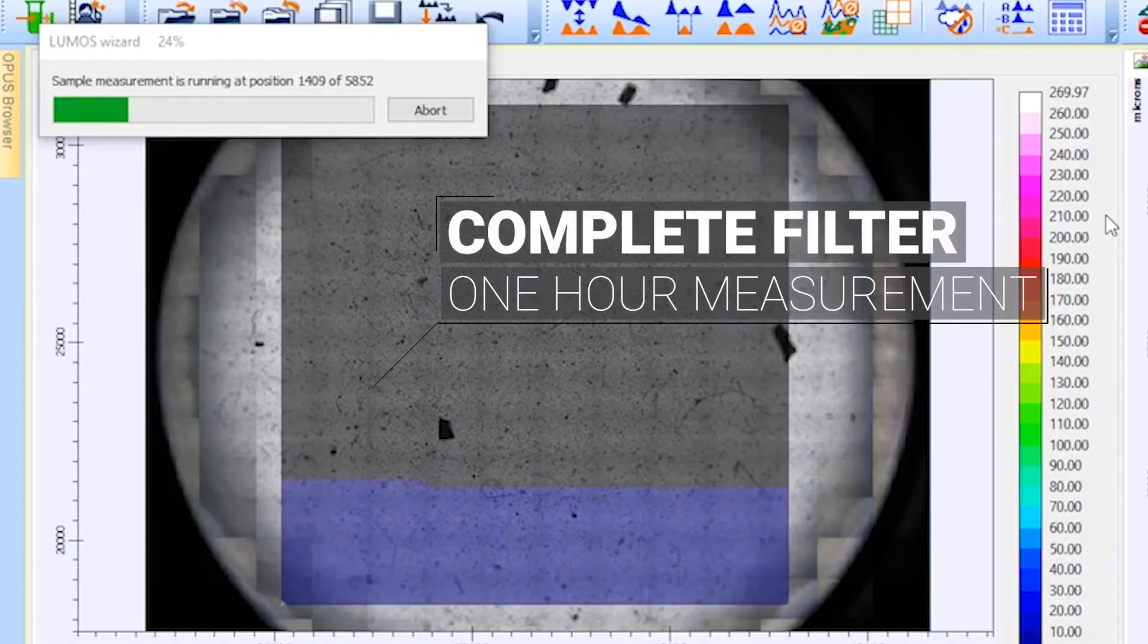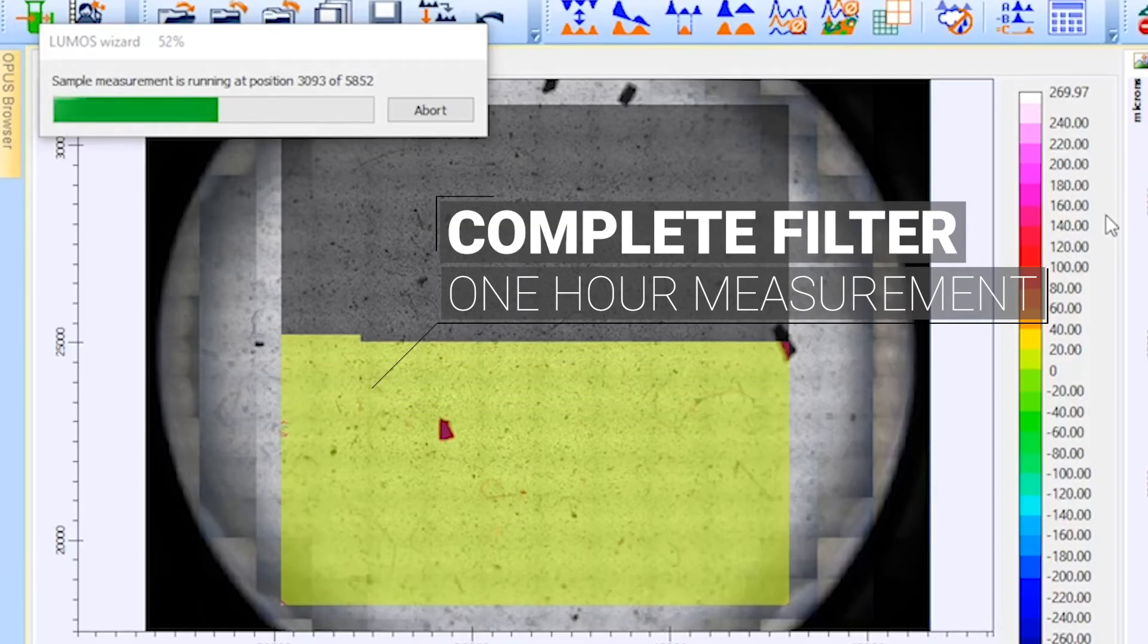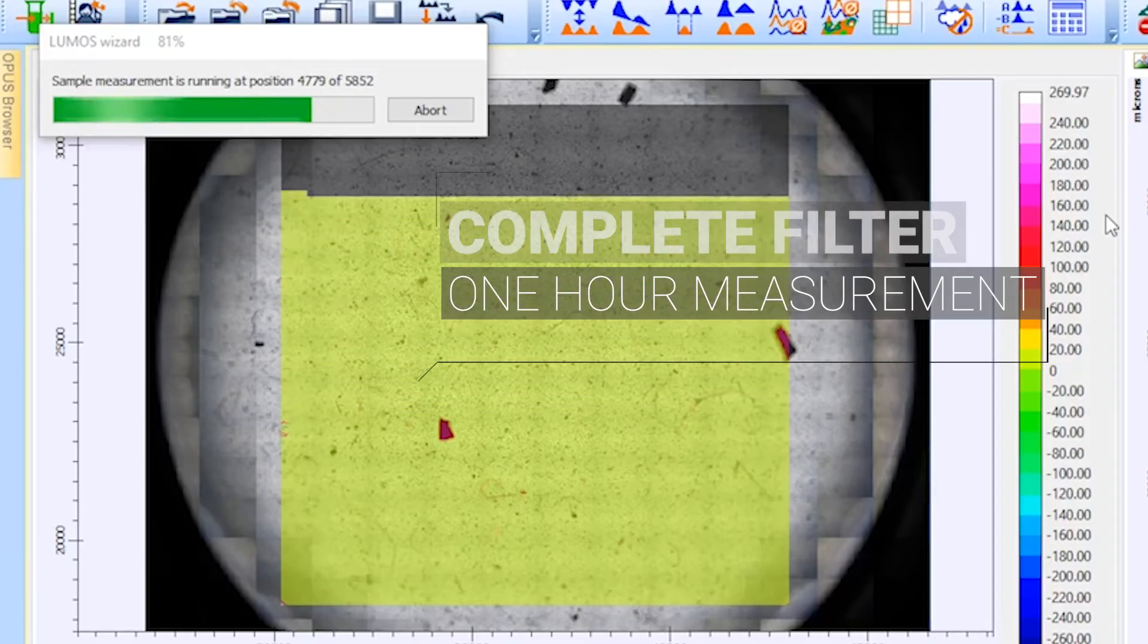Let us look at facts. The Lumos II only needs an hour to analyze a complete 10 by 10 millimeter filter. With that, focal plane array imaging outperforms FTIR single point and Raman imaging measurements by at least three orders of magnitude.